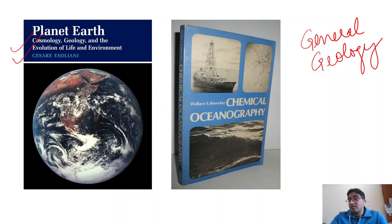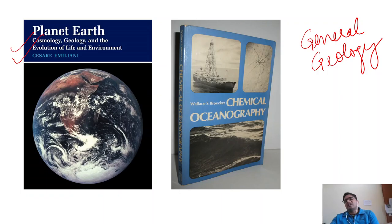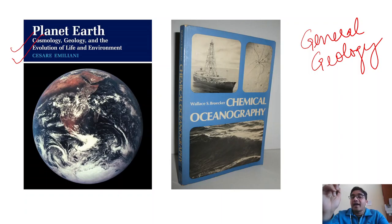Planet Earth by Cesare Emiliani seems as though it was written from the perspective of this examination. Though written in the 1970s, it is an excellent book discussing cosmology, geology, and evolution of life and environment. You should read this word by word if you wish to clear Part B. For chemical oceanography, Chemical Oceanography by Wallace Broecker is a must — it is a brilliant book, also available as a PDF online.